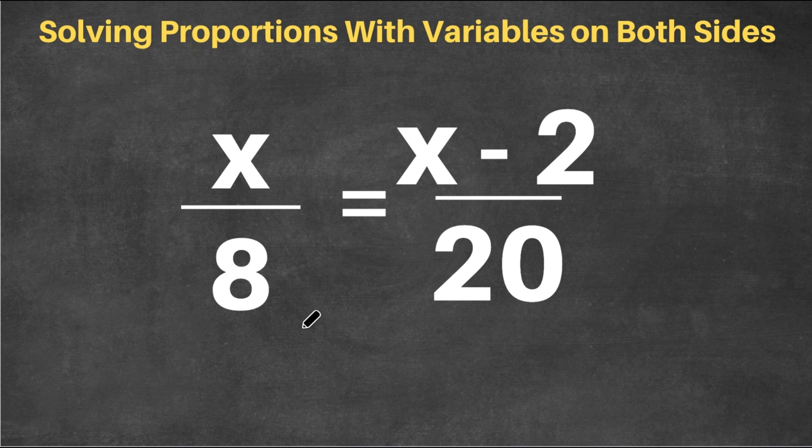Now we have a little trickier problem here. We have x over 8 equals x minus 2 over 20. So this may look a little confusing, but we're still going to use the same concept. We're still going to be using cross multiplication.